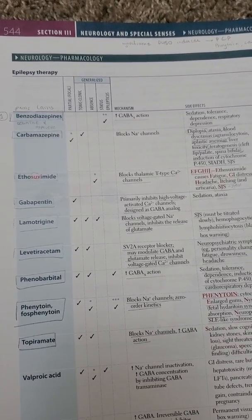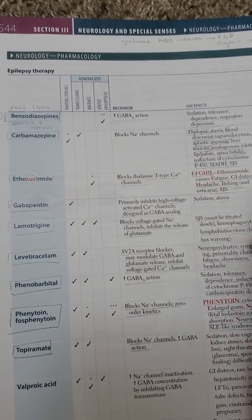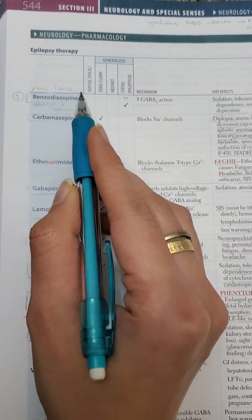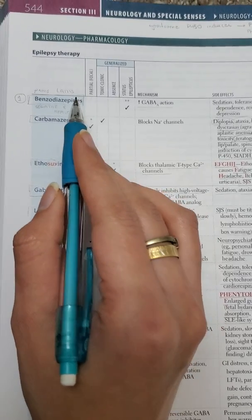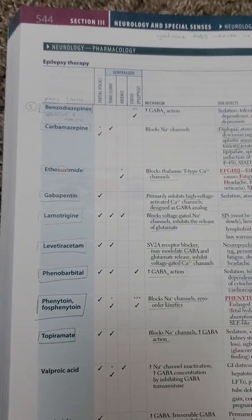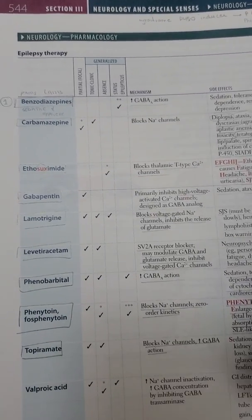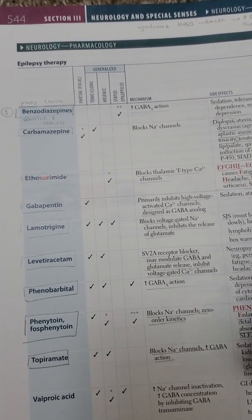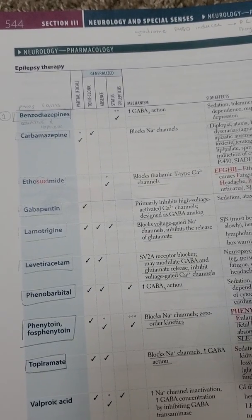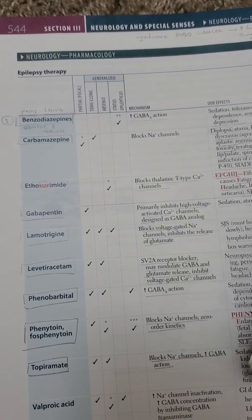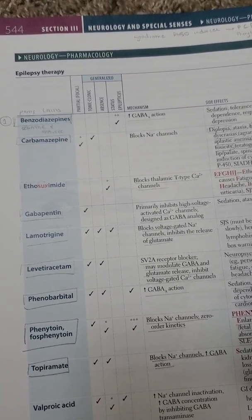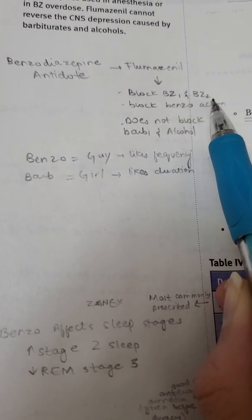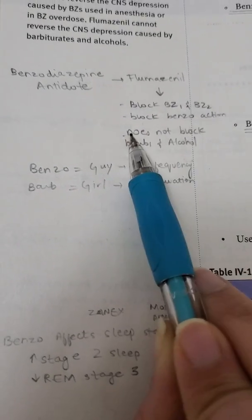Benzos are also misused as a date rape drug. Benzos are better than barbiturates because benzos have an antidote — flumazenil. Benzos are much safer compared to barbiturates. Flumazenil works by blocking the BZ1 and BZ2 receptors, blocking the action of benzos.